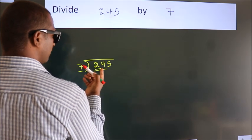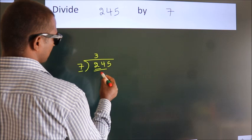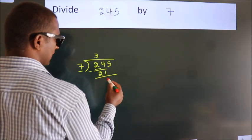A number close to 24 in the 7 table is 7 times 3, which equals 21. Now we subtract and get 3.